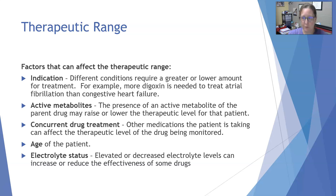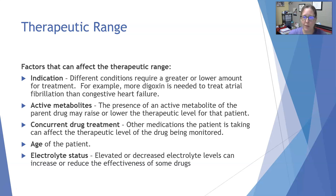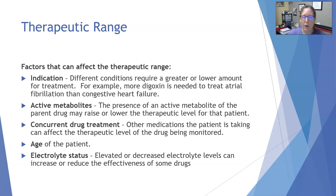Things that could affect the therapeutic level for a patient: first, indication — why the drug is given. Different conditions require a greater or lower amount of the drug. For example, more digoxin is needed to treat atrial fibrillation than congestive heart failure, so the therapeutic level for a patient with atrial fibrillation will differ from one with congestive heart failure.